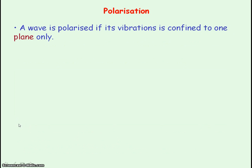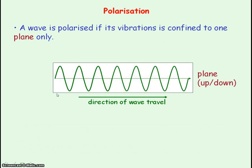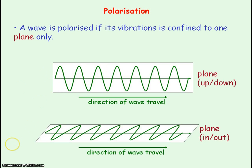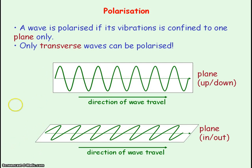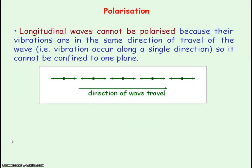A wave is polarised if its oscillations or vibrations are confined to one plane only. Here we have a polarised transverse wave whose vibrations are confined to the vertical plane — the up-down plane. Only transverse waves can be polarised, with vibrations restricted to one plane. Longitudinal waves cannot be polarised because their vibrations are along the same direction as the travel of the wave, occurring along a single line rather than a 2D plane.